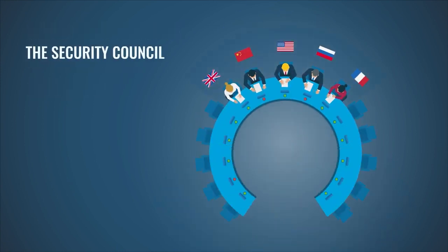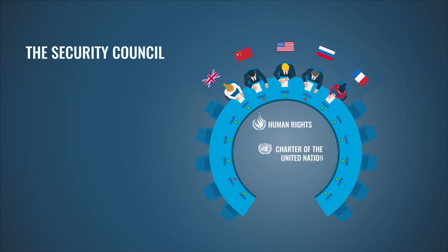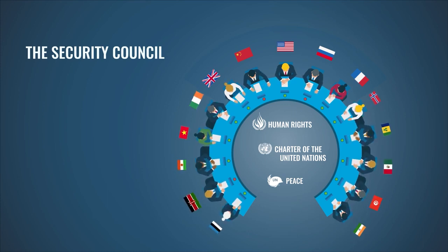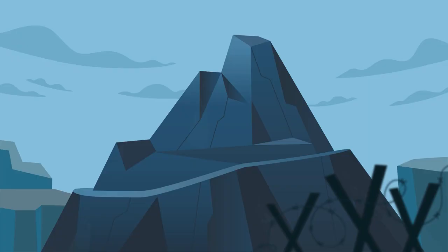The most powerful organ of the UN is the Security Council. It's in charge of maintaining peace and security between nations. The Council has 15 members, five of which are permanent, and the remaining 10 members are elected for two-year terms.